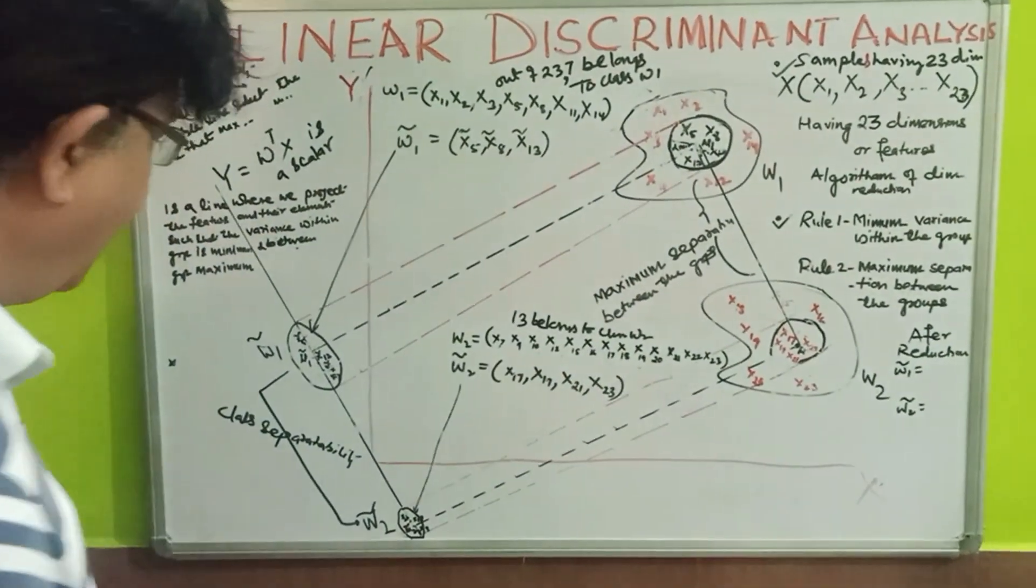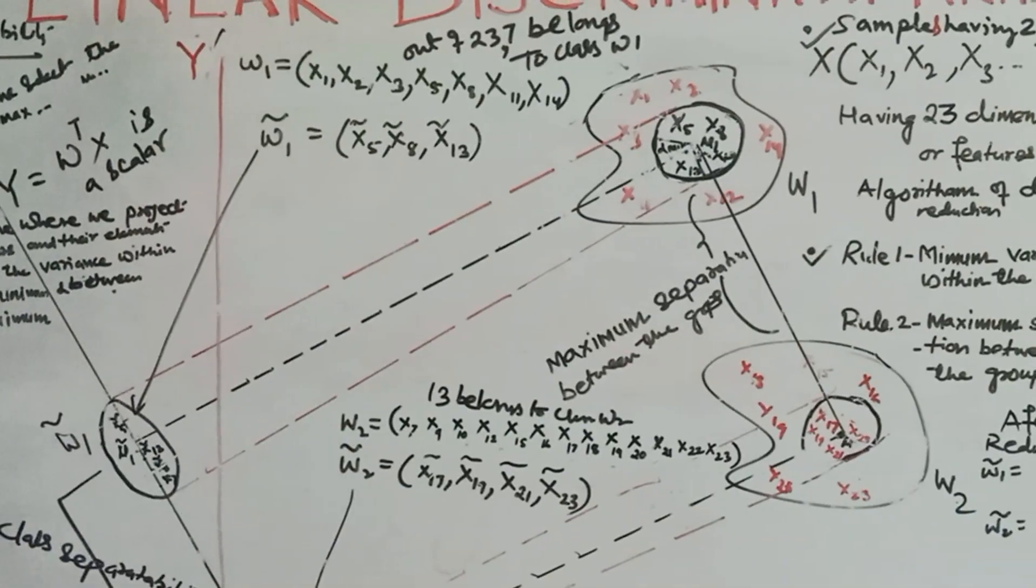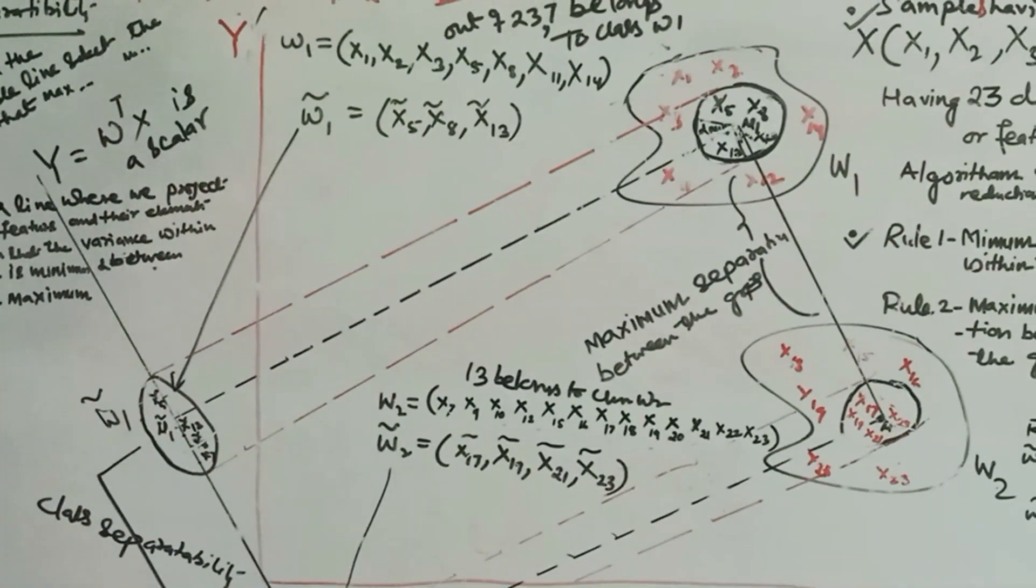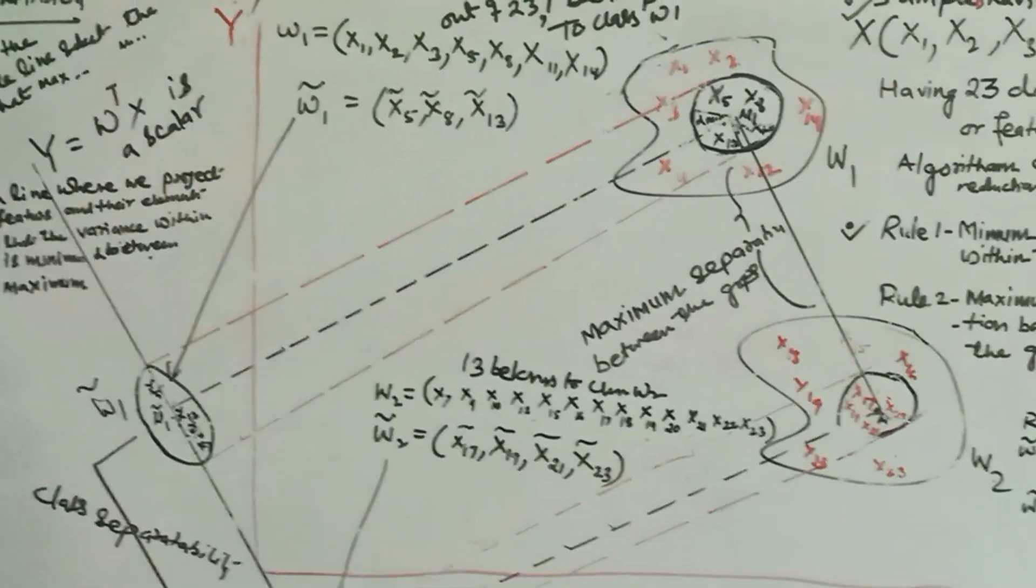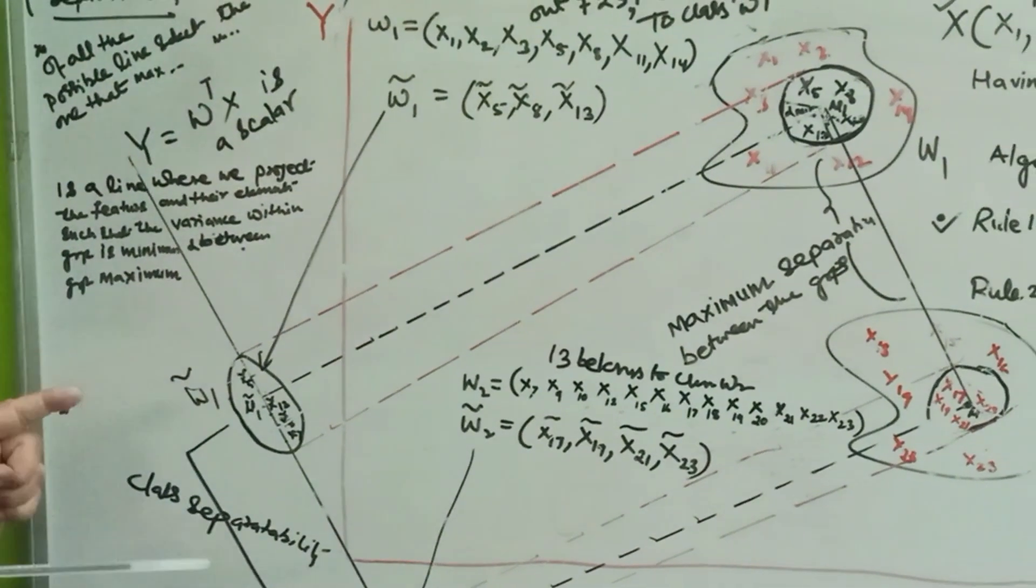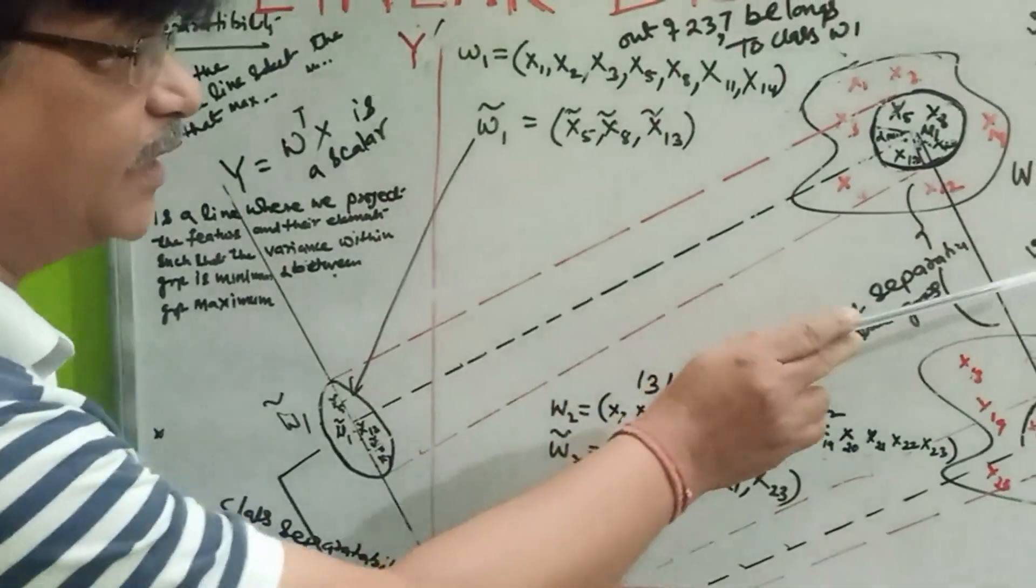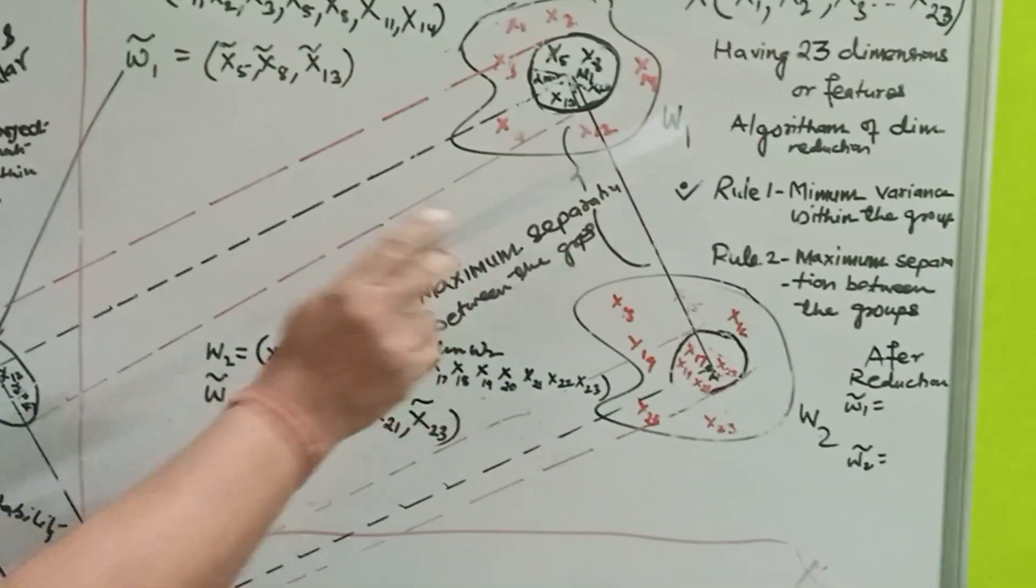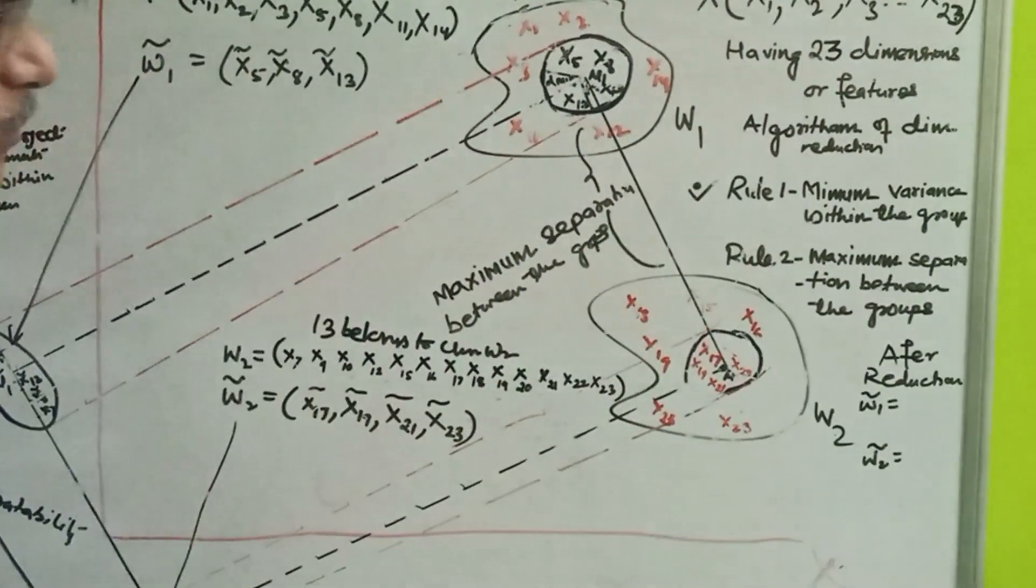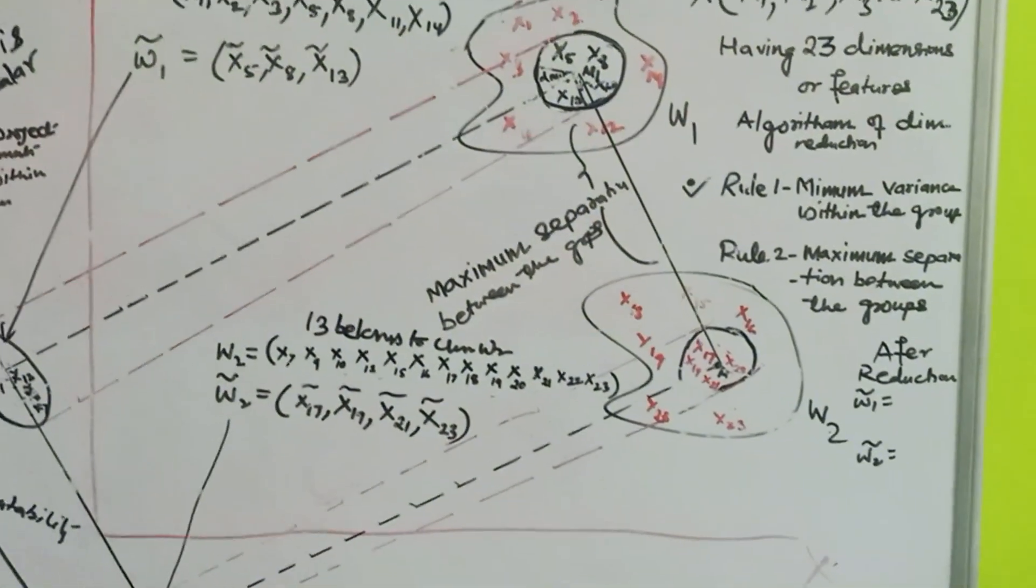Okay. And so, now, I have to create a subspace. So, now, I am creating a subspace. Imaginary space out of this real space. And in that subspace, I have to get the whole information. And simultaneously, I have to reduce the dimensions also by applying these two rules. These two rules, again, I am telling to you, that minimum variance within the group and maximum separation between the groups.